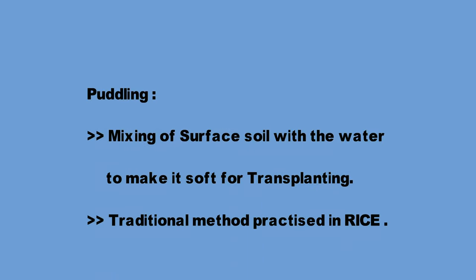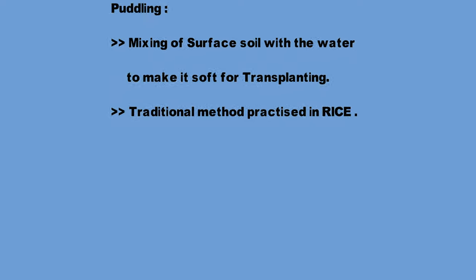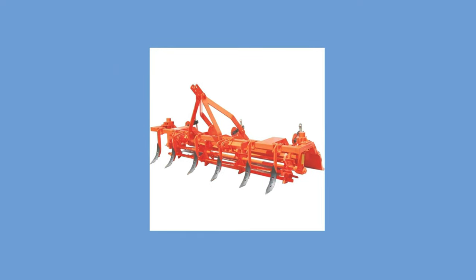Puddling is a process of mixing soil with water to make it soft for transplantation. This is a traditional method practiced in rice cultivation which reduces the process of percolation. Here is the puddler, which costs nearly 42,000 rupees, and you can see the process of puddling in a small video clip.